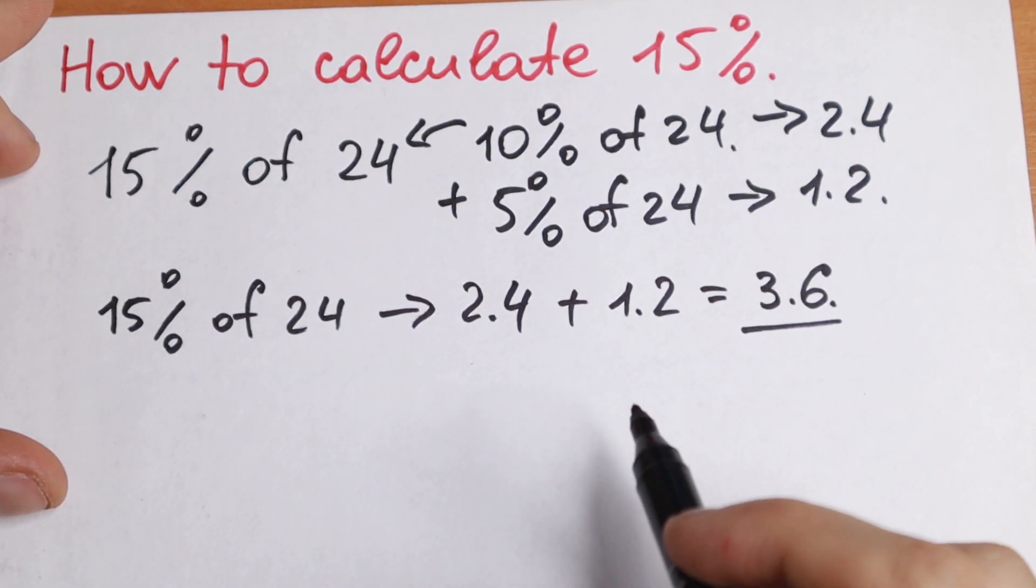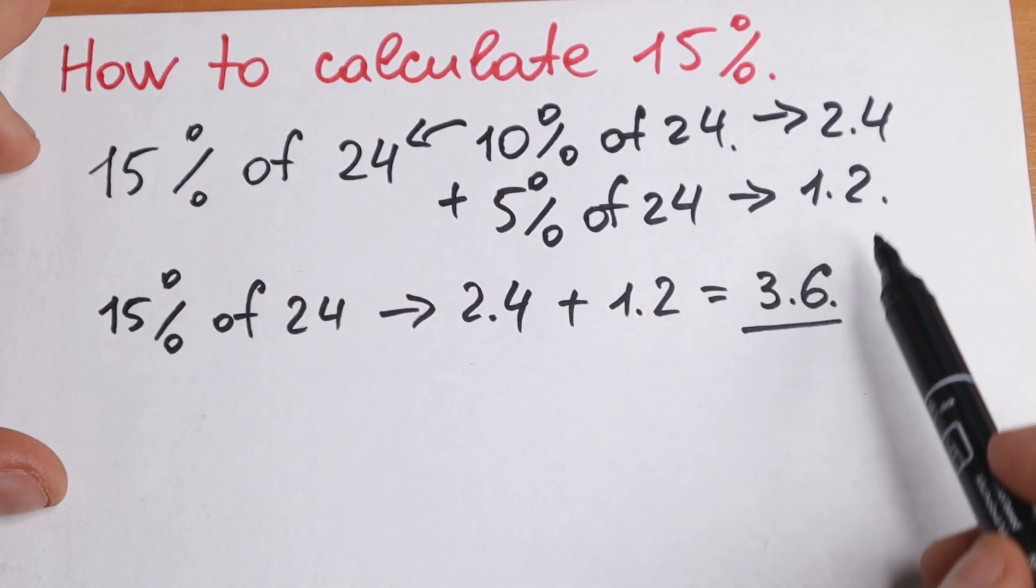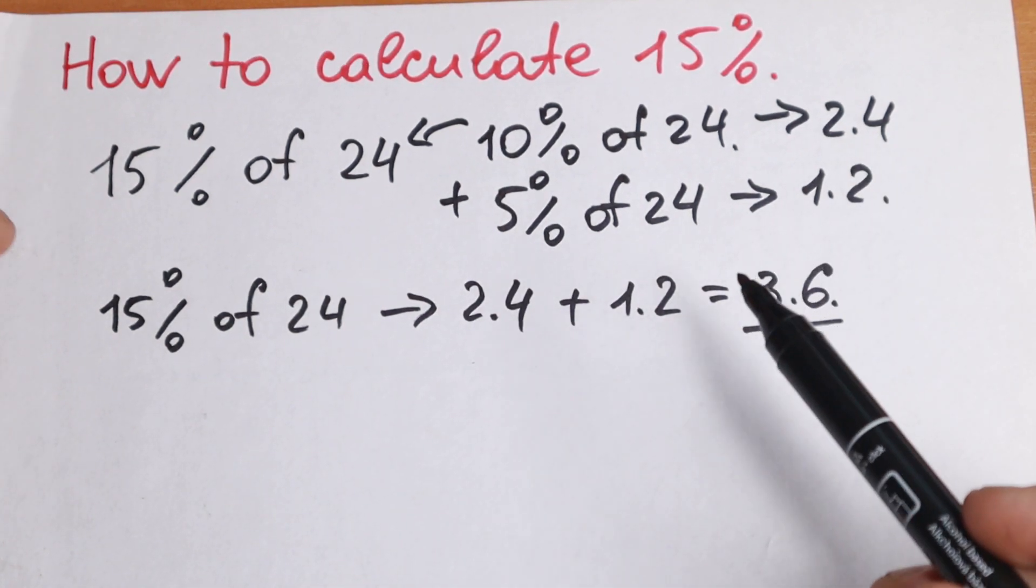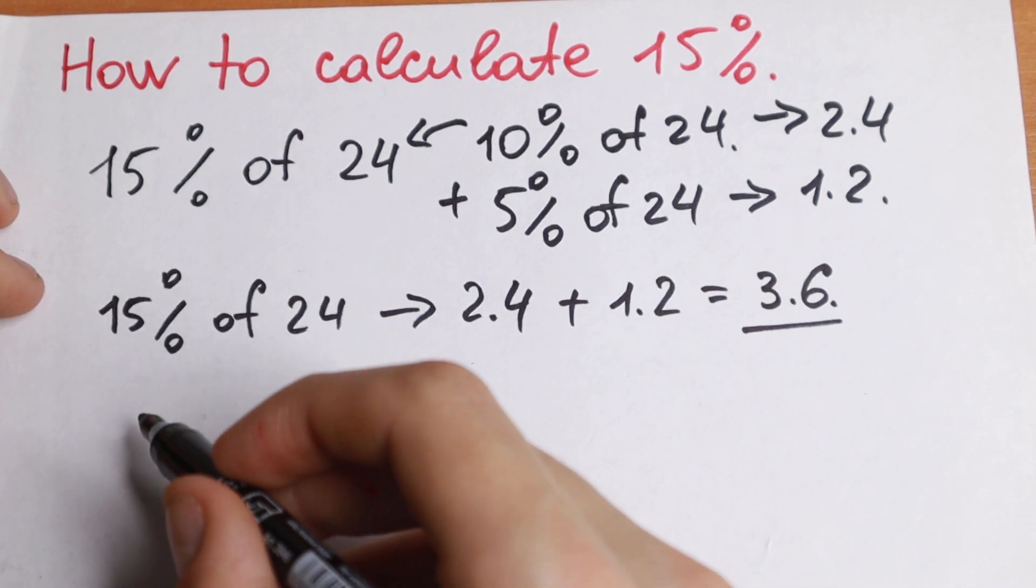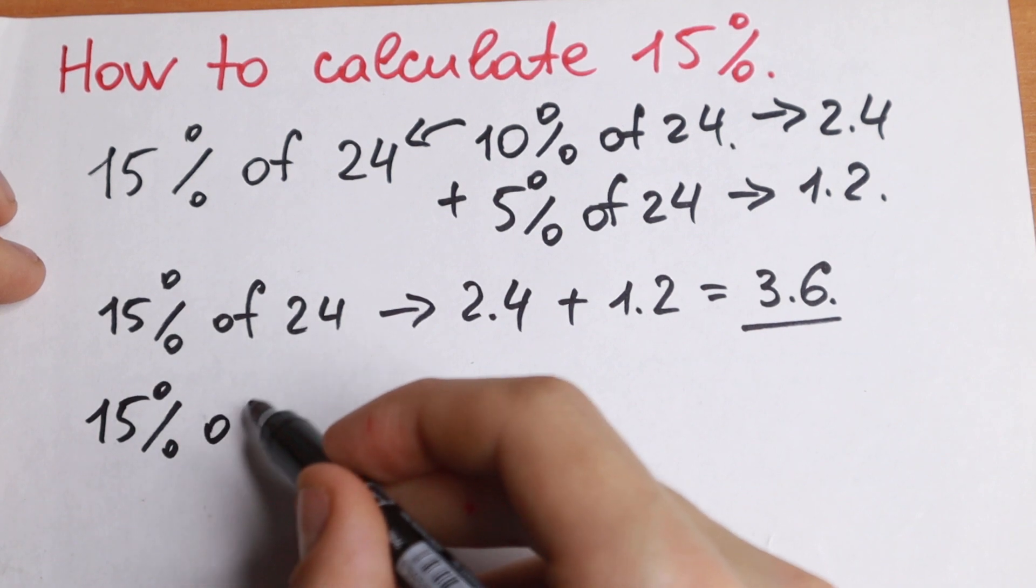So what is the rule? Find at first 10% and add 5%, but 5% is the half of this 10%. So let's solve once more, once more example. For example, we need to find 15% of, for example, 40.